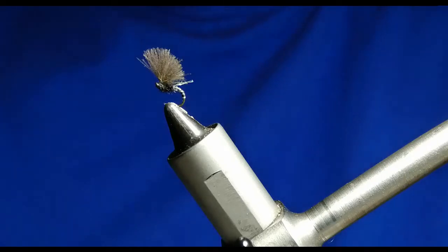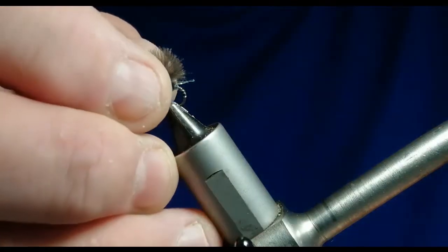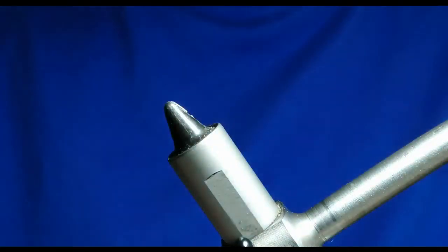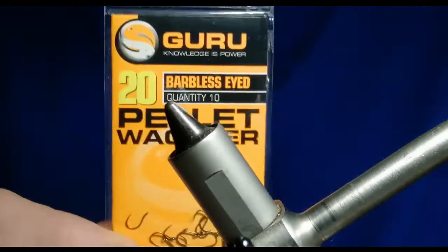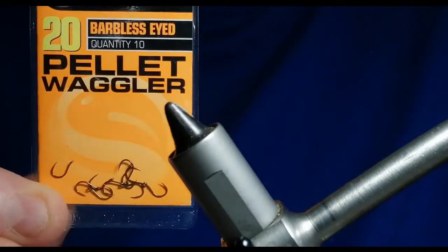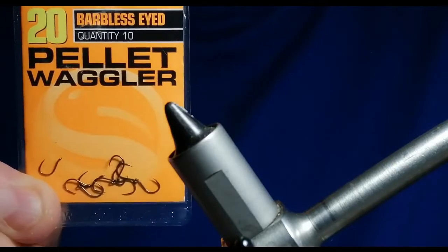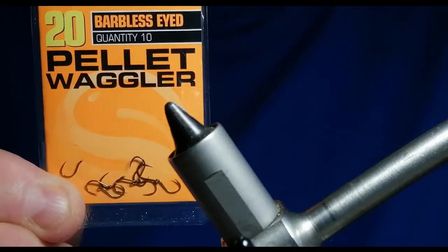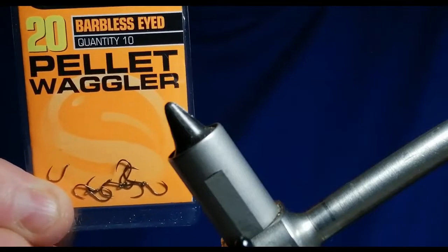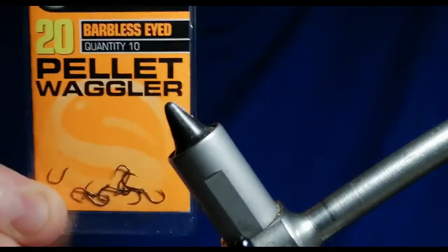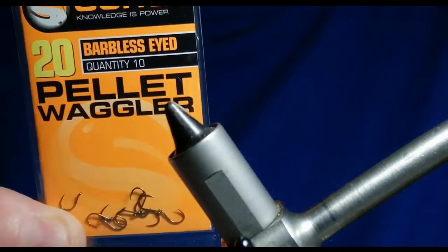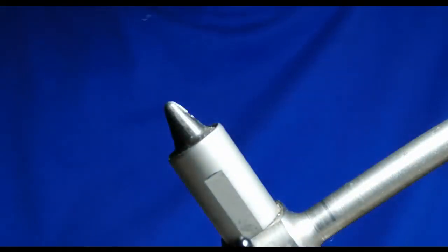So we'll get on tying now. The hook I'm going to put in the vise isn't a dry fly hook as such, it's a carp hook. I've used them for quite a while now. Small but with a wide gap and very strong and light. This is a size 20, so we'll put one in.